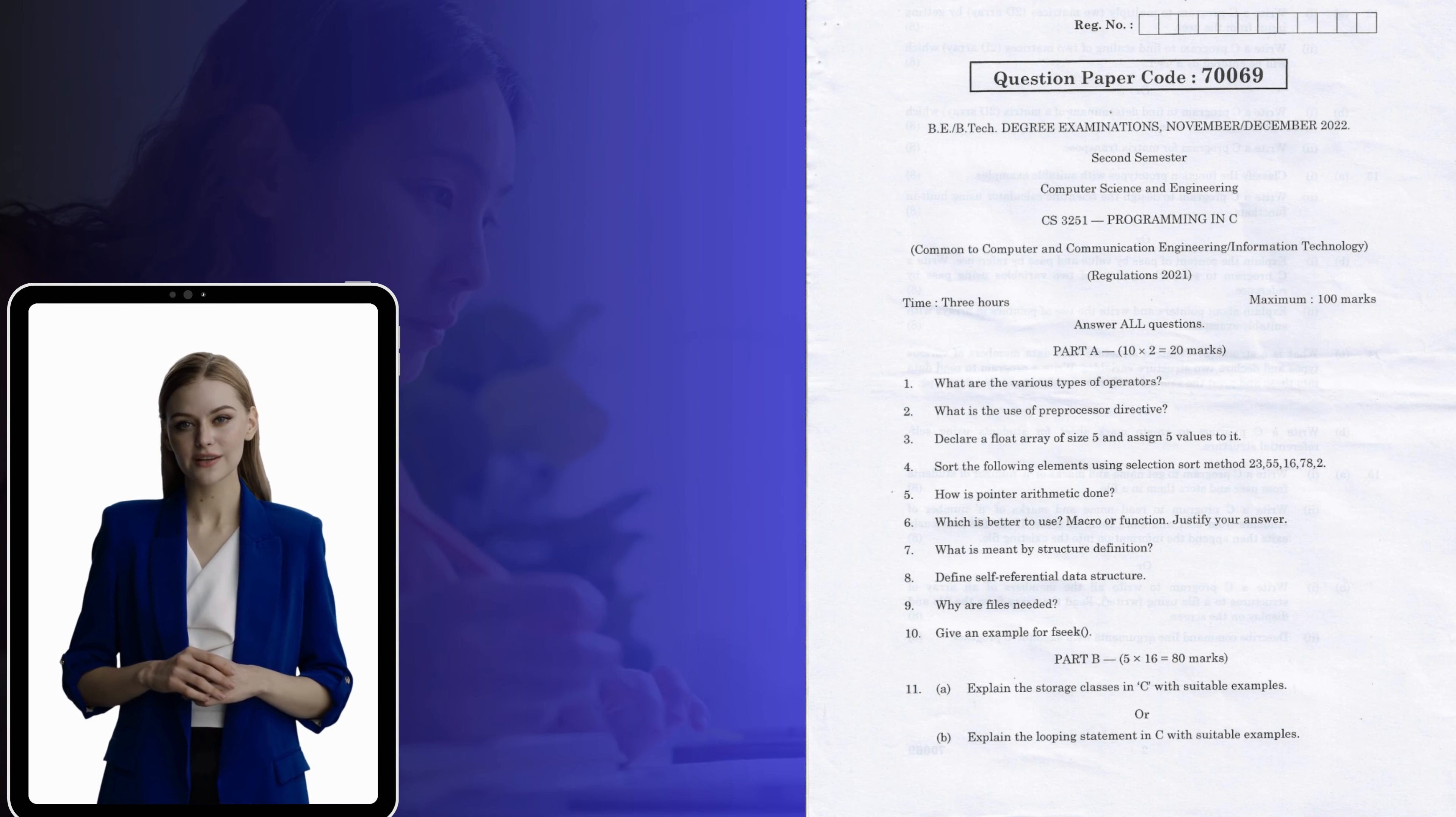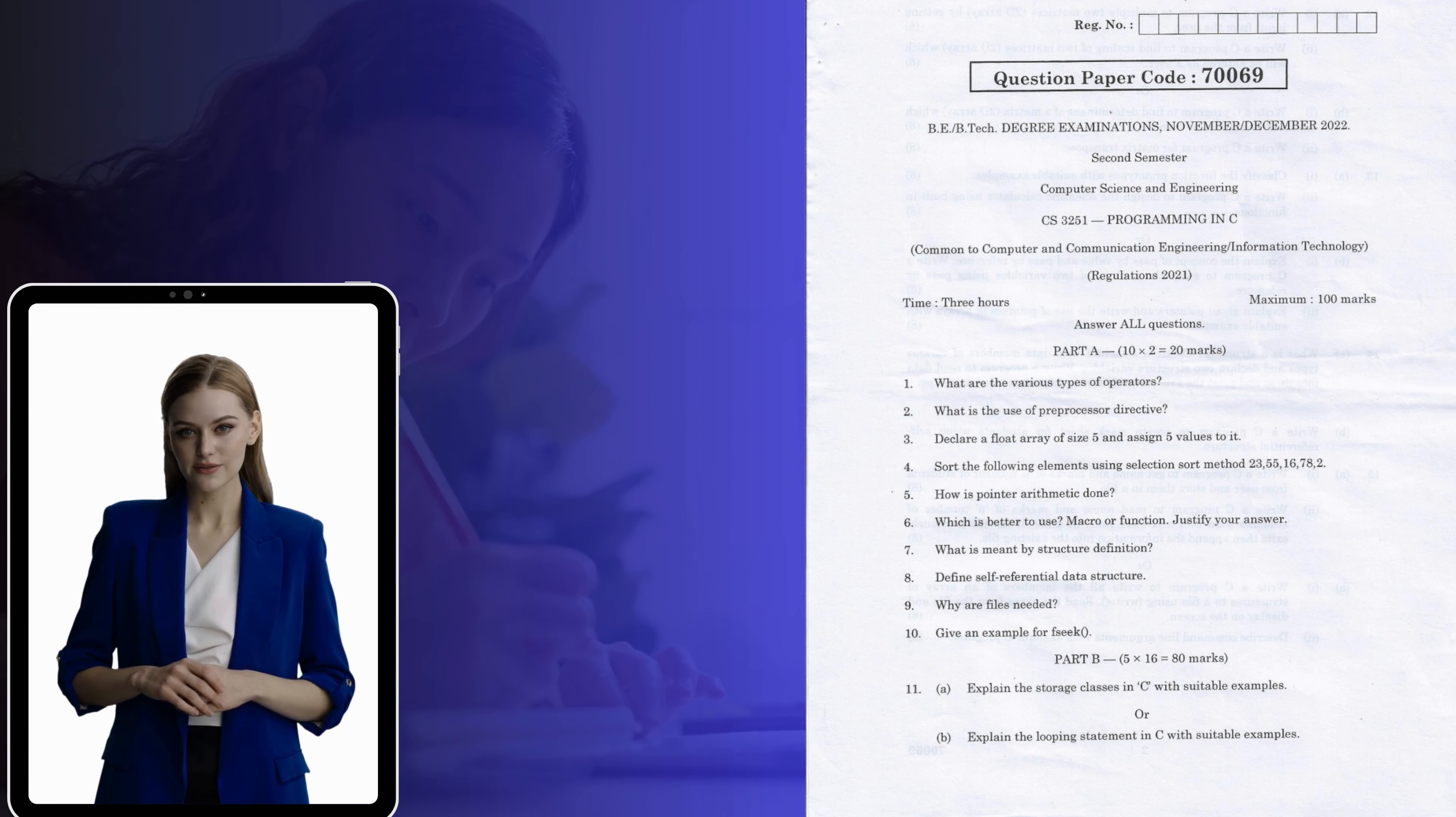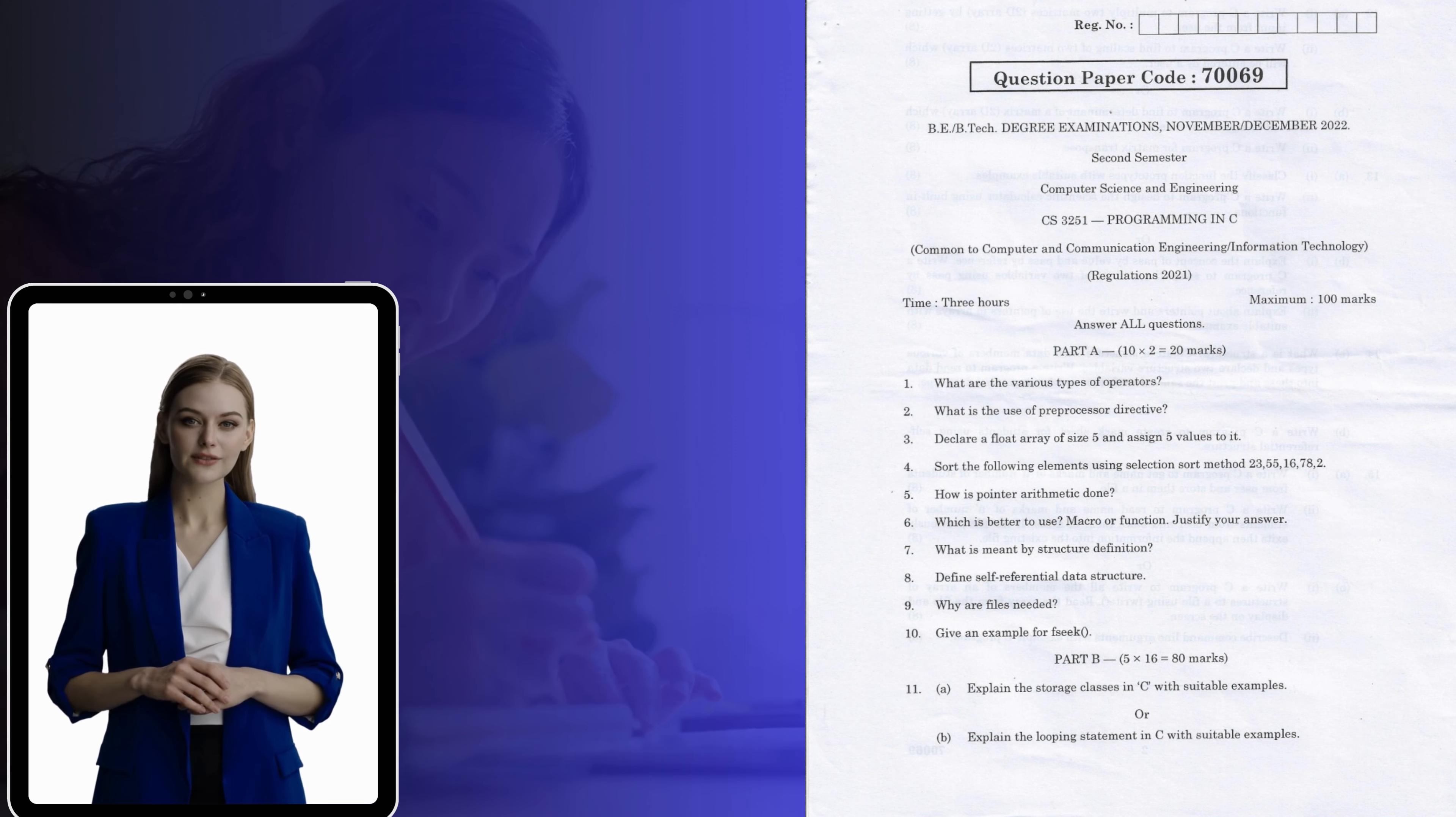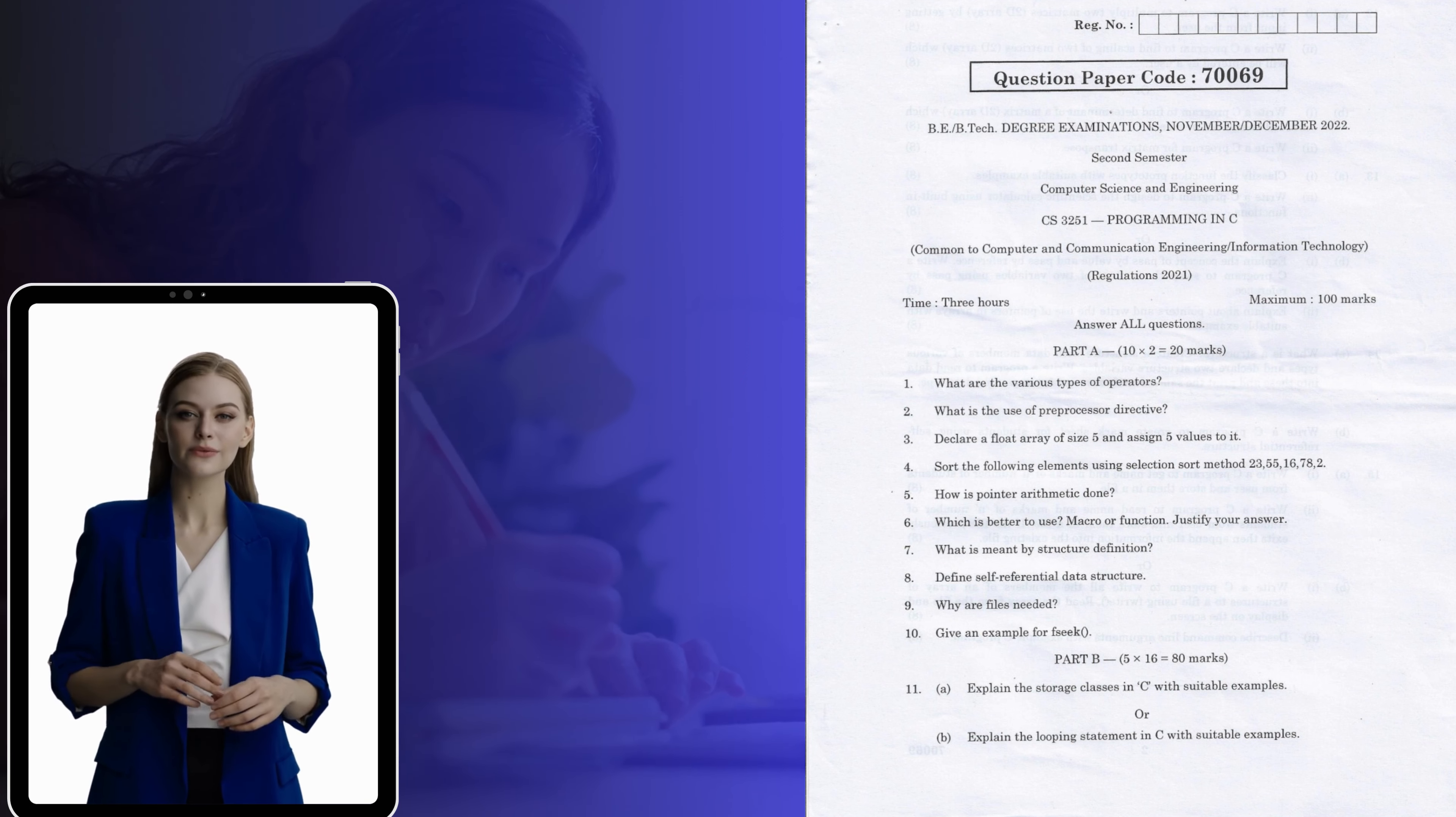Let's see November-December 2022 question paper. Part A, 2-mark questions. 1. What are the various types of operators? 2. What is the use of preprocessor directive? 3. Declare a float array of size 5 and assign 5 values to it. 4. Sort the following elements using selection sort method: 23, 55, 16, 78, 2. 5. How is pointer arithmetic done?